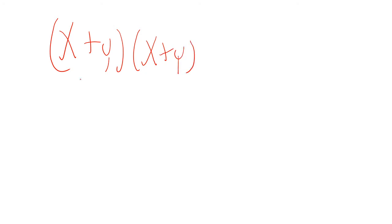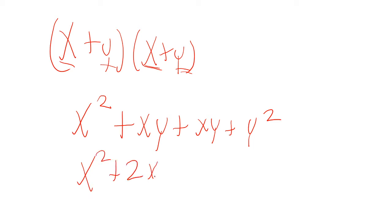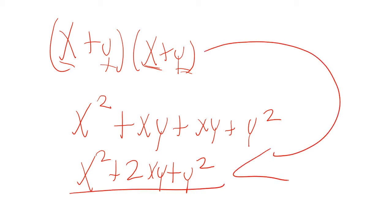To expand binomials, we multiply x by each term, and multiply y by each term. So: x times x is x squared, x times y is xy, y times x is xy again, and y times y is y squared. Combining like terms, this gives us x squared plus 2xy plus y squared.